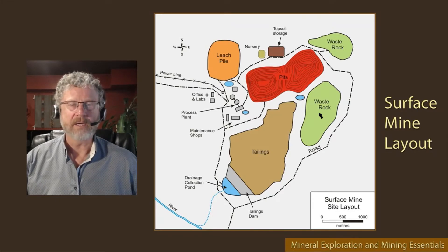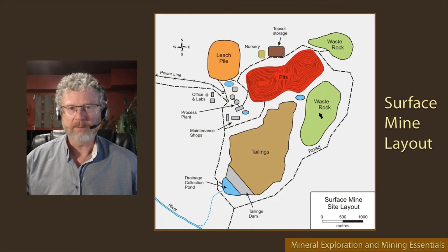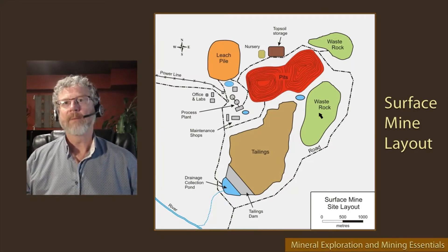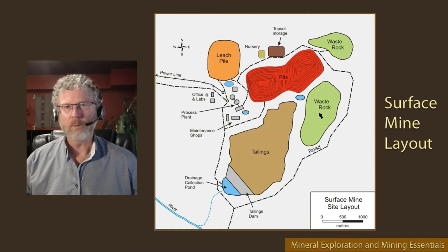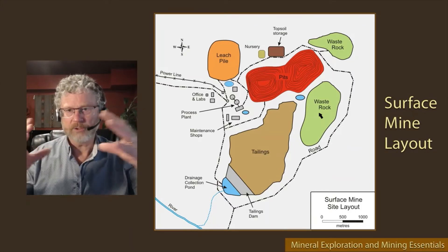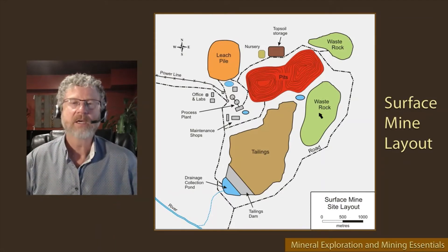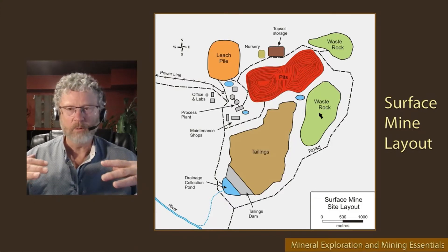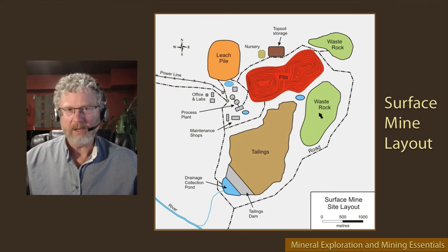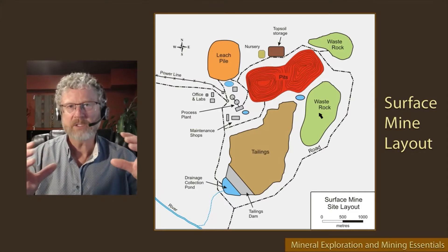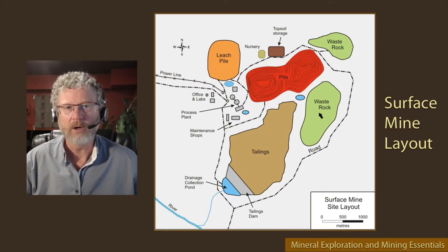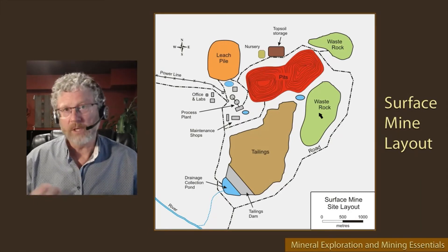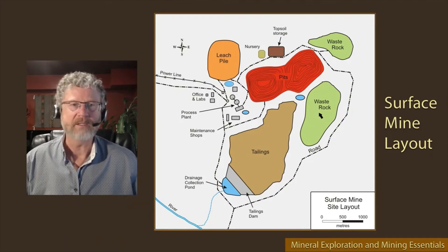Waste rock has to be drilled and blasted to be removed from the pit. The size ranges from big boulders down to smaller pieces, and when placed on the surface it can be arranged in a way that remains stable. You can't make the piles too steep or they won't be stable, so they have to be designed carefully.